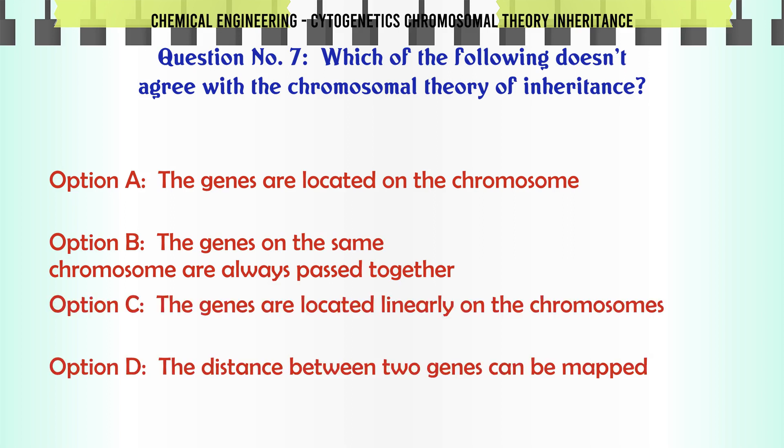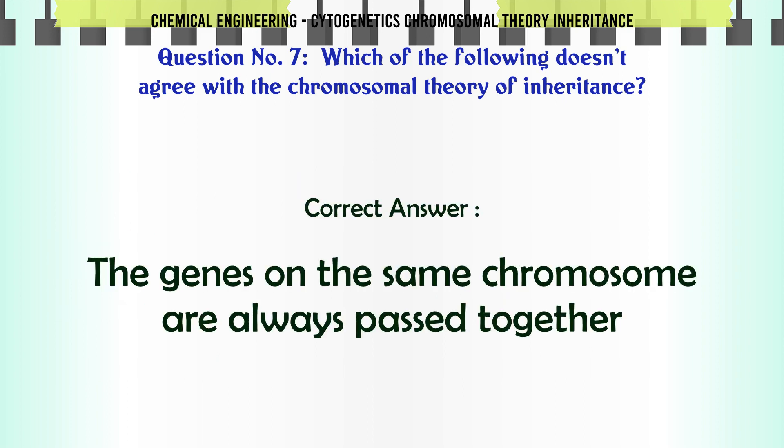Which of the following doesn't agree with the chromosomal theory of inheritance? A: The genes are located on the chromosome. B: The genes on the same chromosome are always passed together. C: The genes are located linearly on the chromosomes. D: The distance between two genes can be mapped. The correct answer is: the genes on the same chromosome are always passed together.